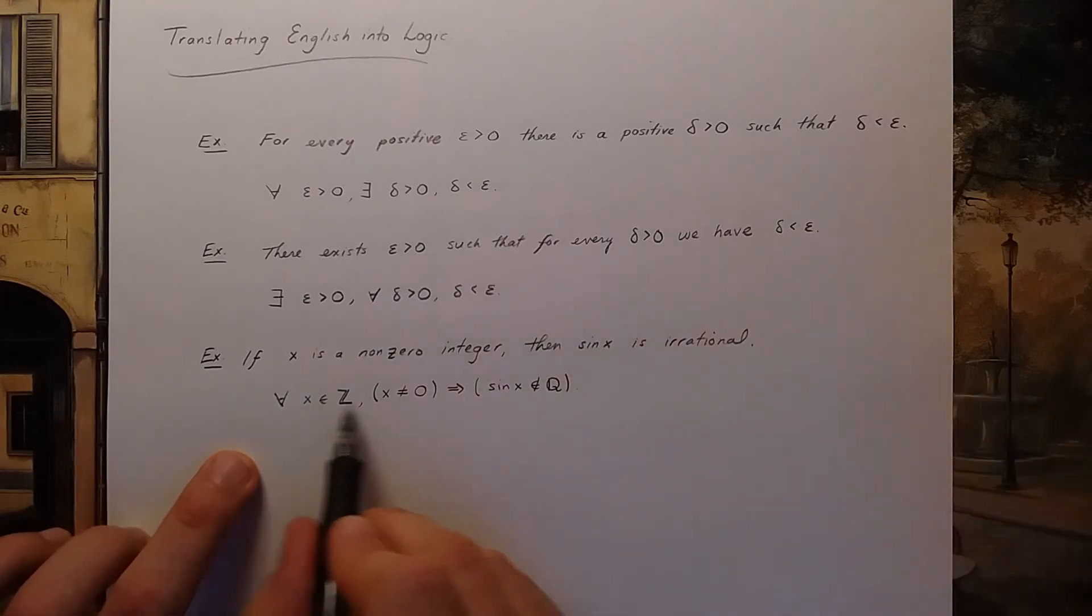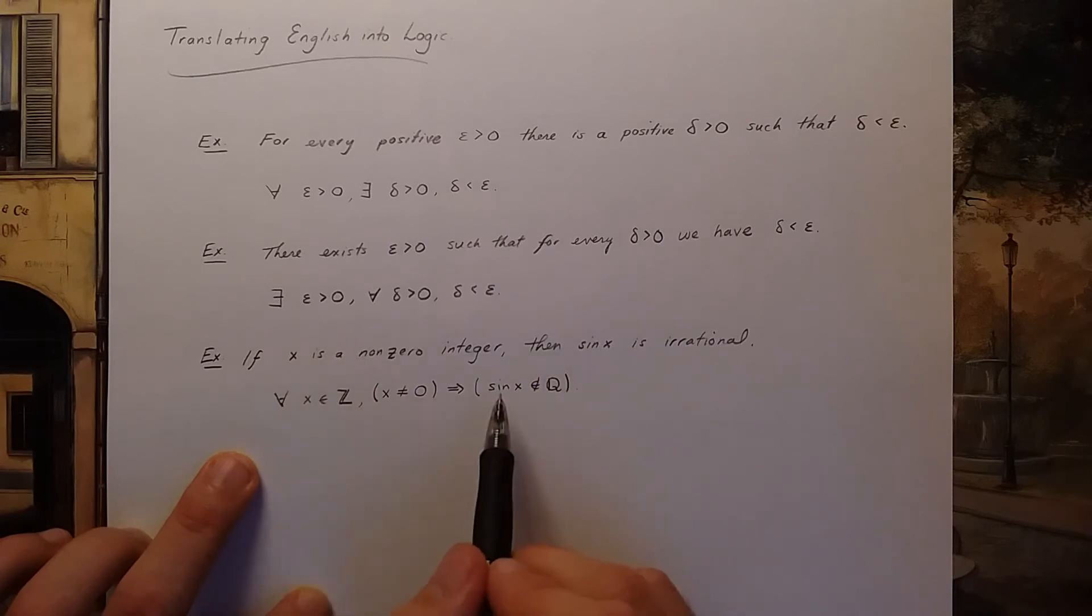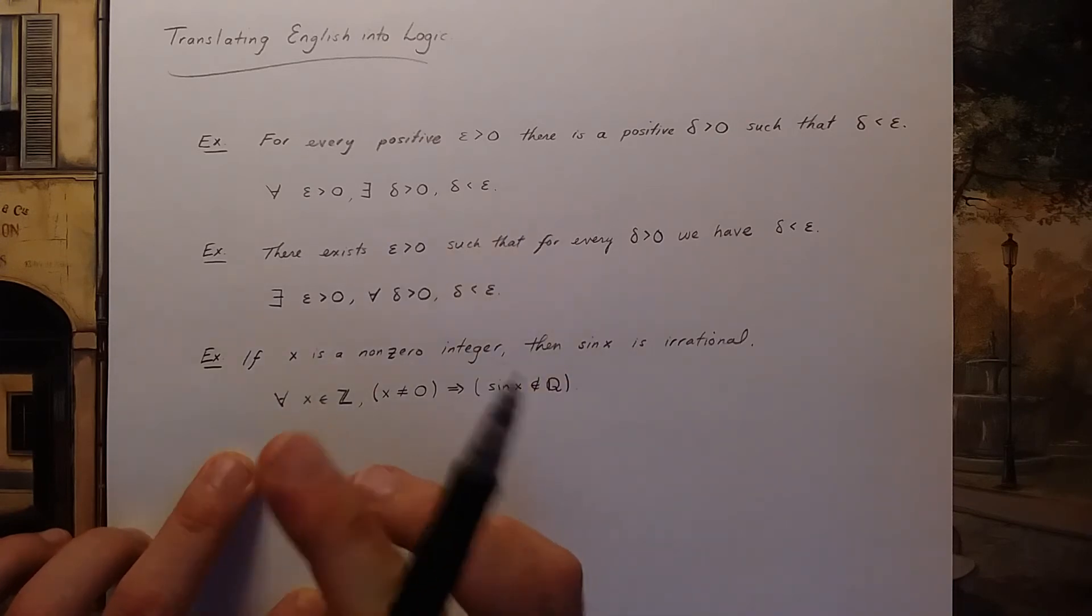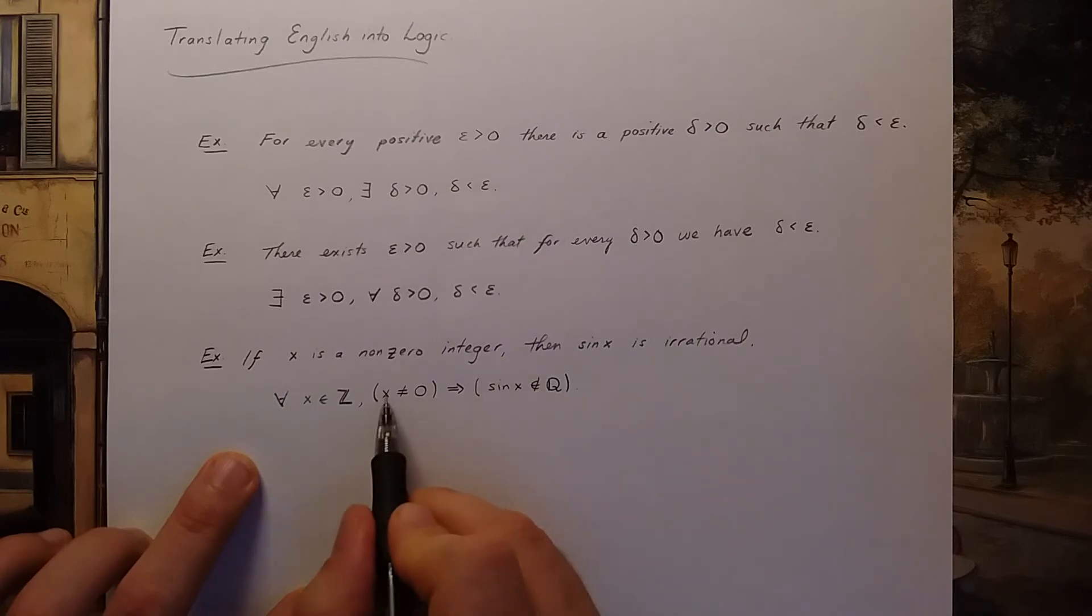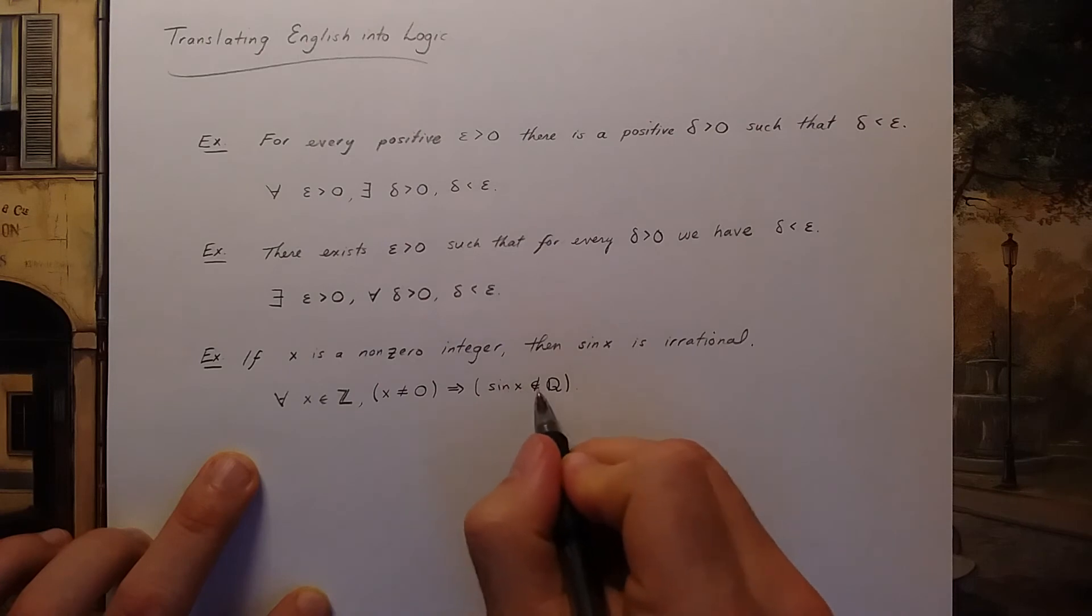Now in this case this is a perfectly valid way to turn the sentence into a logical statement, but I noticed that I have two nots. I have x is not zero and I have sine x is not in the rationals.